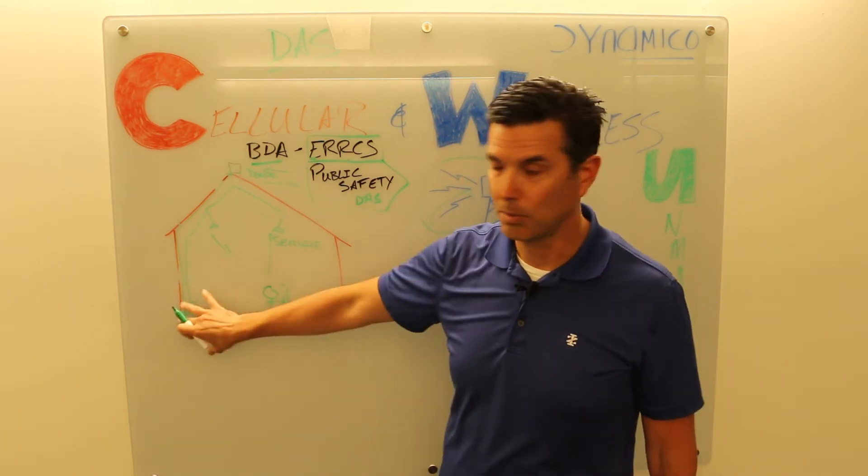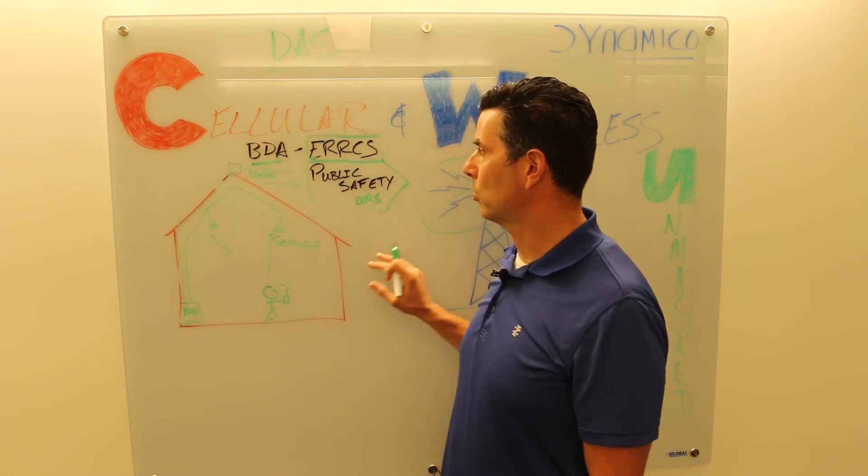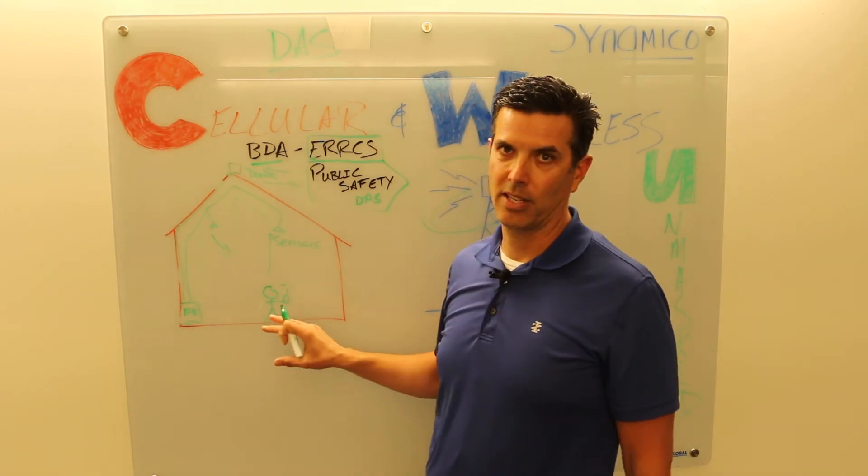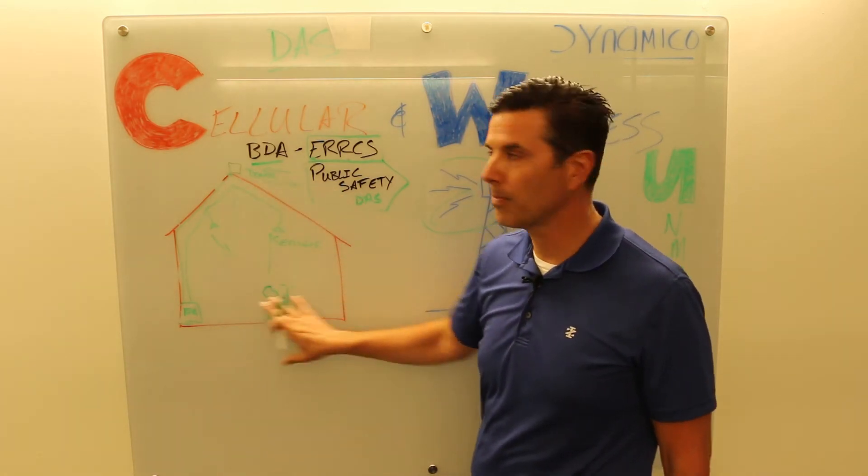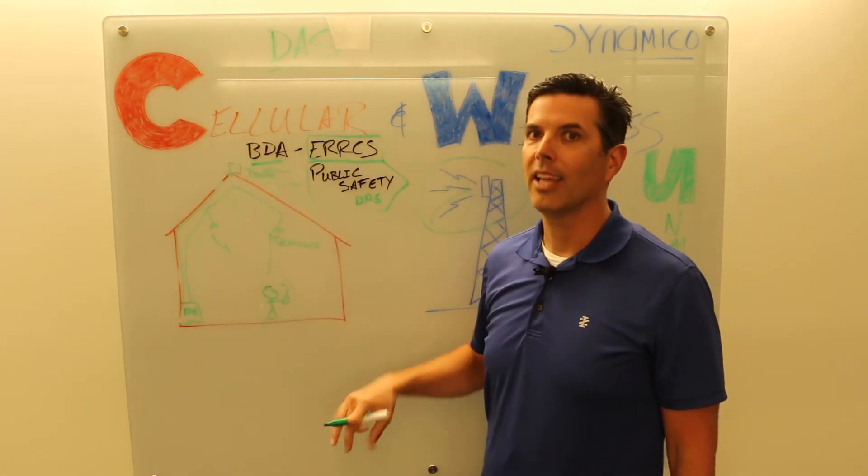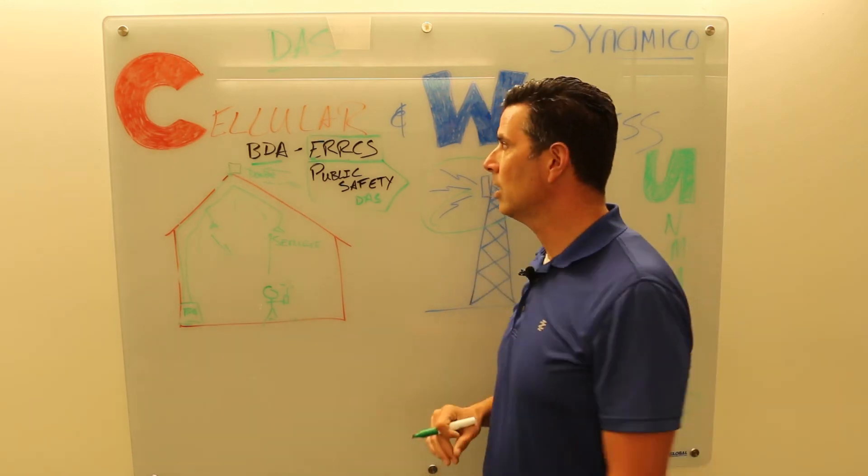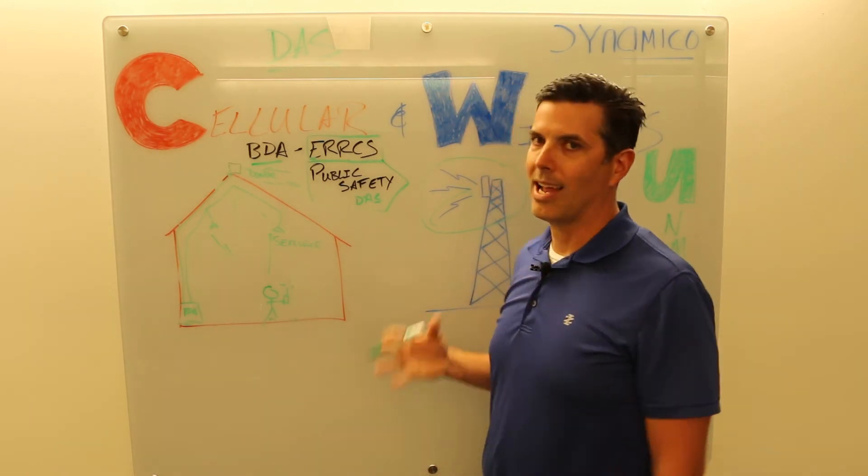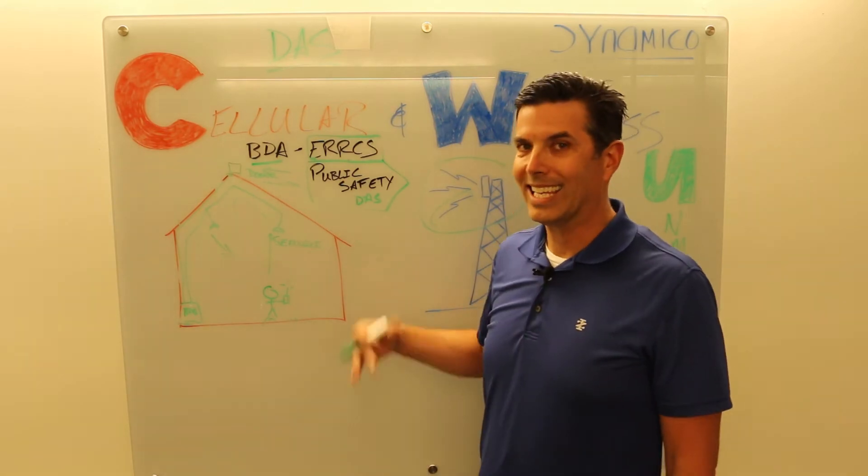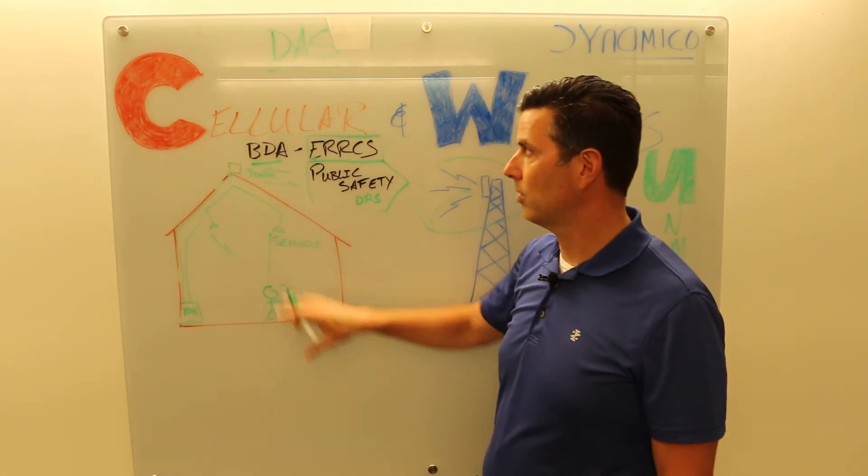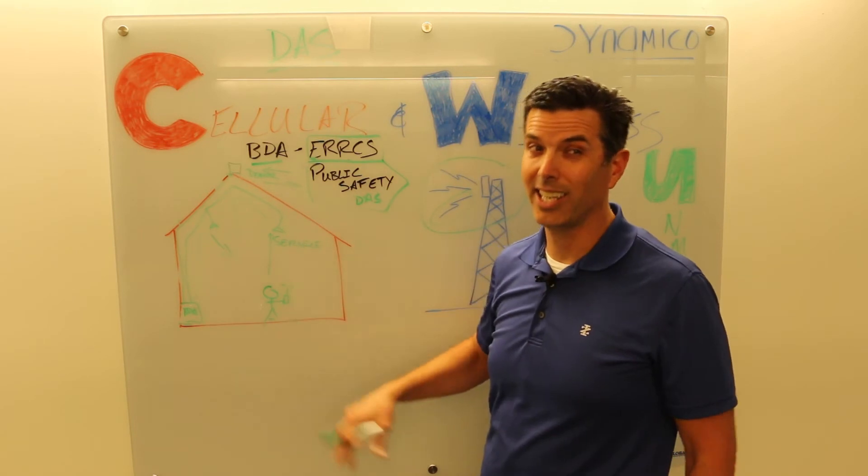This is typically a BDA system. It's very common to have multiple bands, VHF, UHF, 700, 800, so you have to have multiple BDAs in some cases. That's a public safety DAS. You can do cellular, you can do a cellular system. Again, it's complicated, it involves the carrier approval. It's typically not done. It exacerbates a capacity problem.